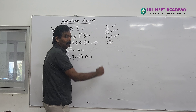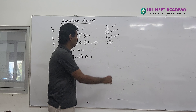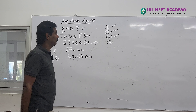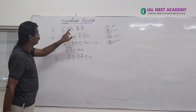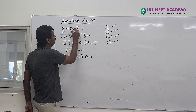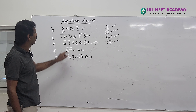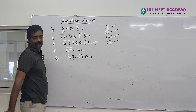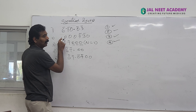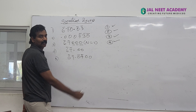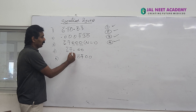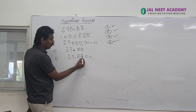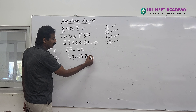Rule 4: in a number with a decimal, the trailing zeros are significant. For a decimal number, the trailing zeros after the decimal are significant. For each decimal number shown, the trailing zero is significant.